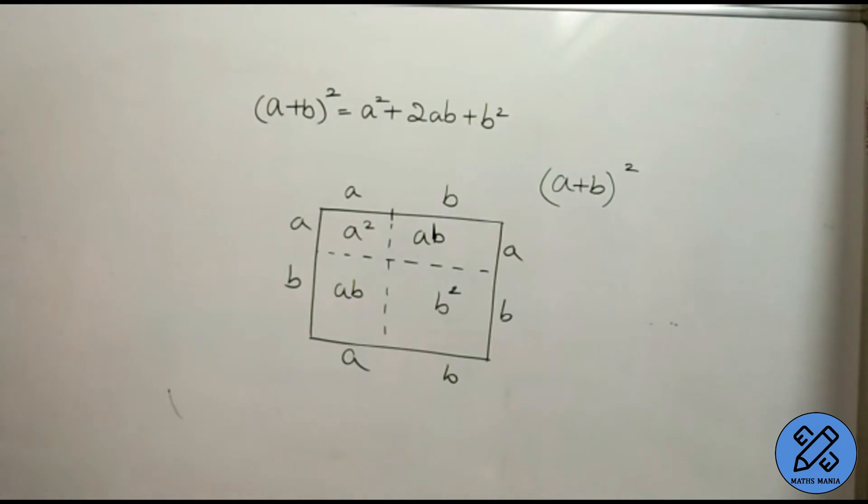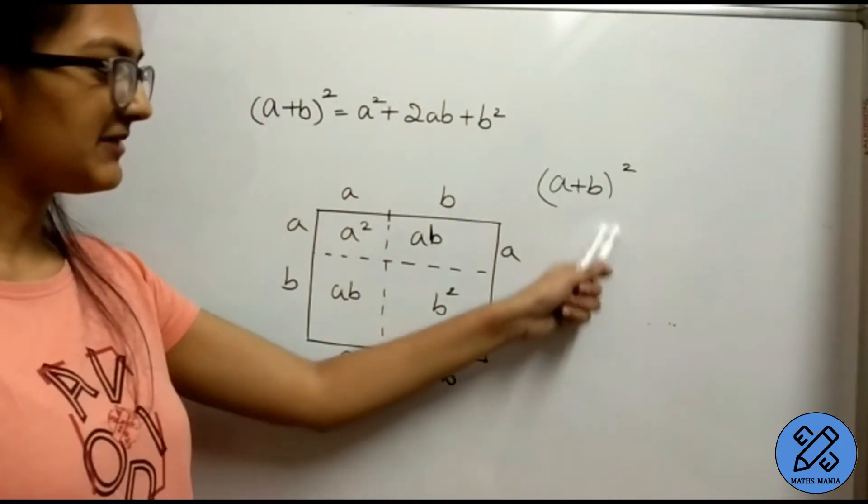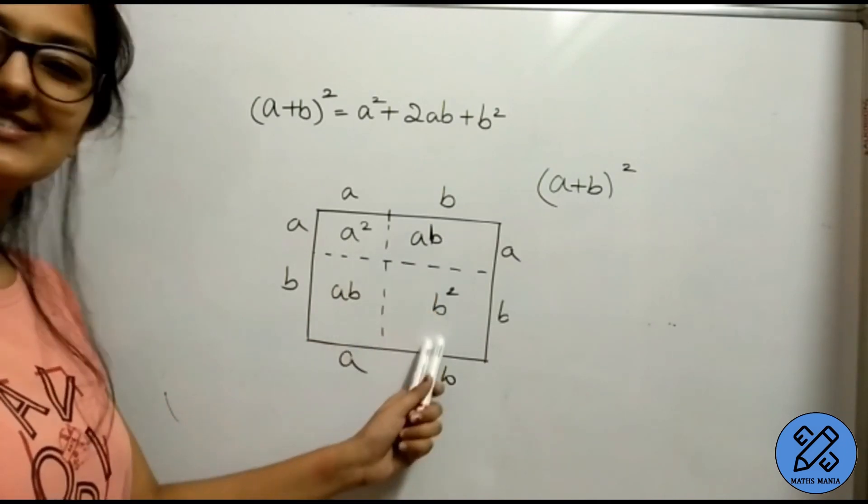And now, what is the area of this whole square? a plus b the whole square. And hence, we got our answer. See ya.